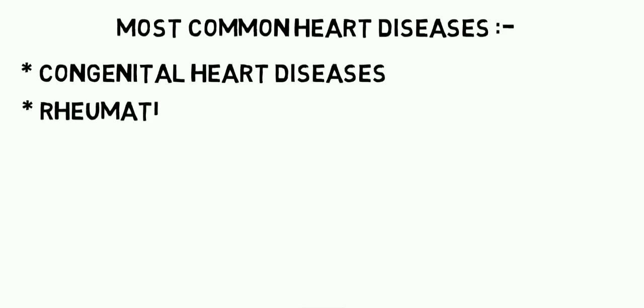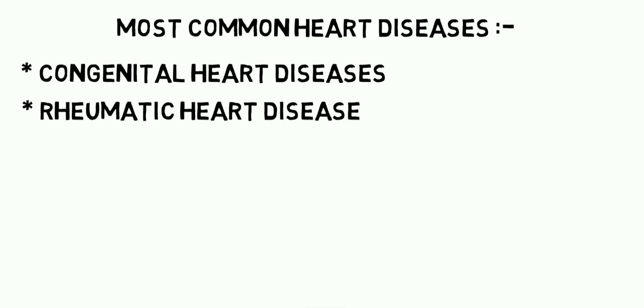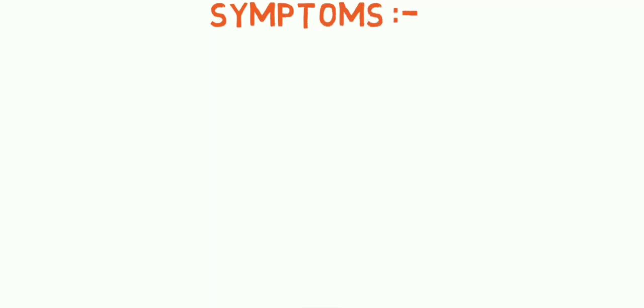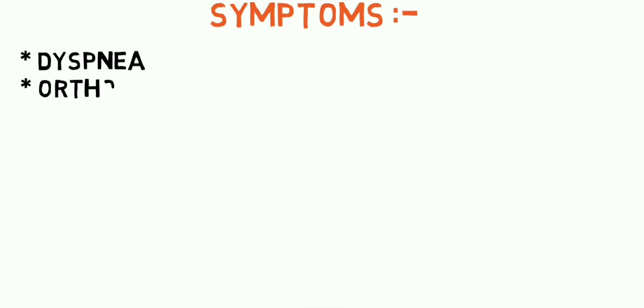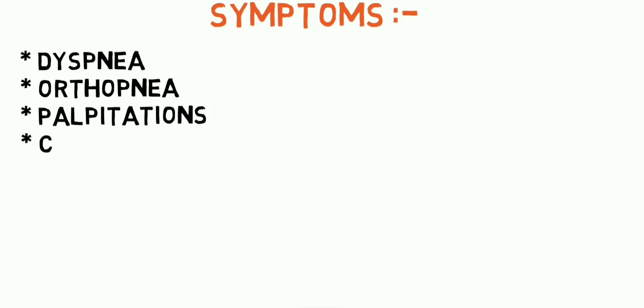Rheumatic heart disease basically occurs following improperly or inadequately treated beta-hemolytic streptococci bacterial infection. The symptoms of heart disease in pregnancy include dyspnea, orthopnea, palpitations, and chest pain.